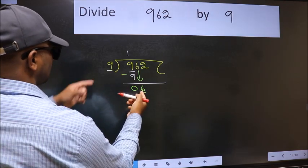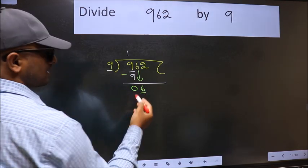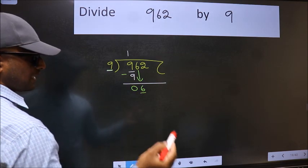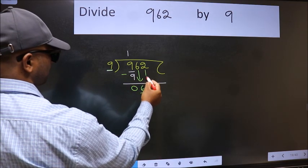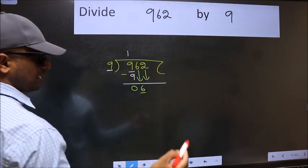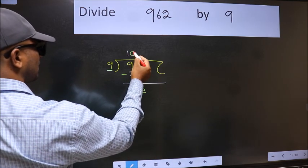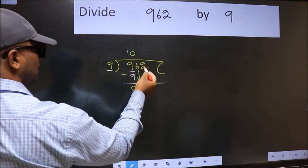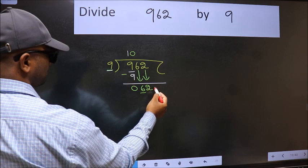6 is smaller than 9, so we should bring down the second number. The rule to bring down the second number is we should put 0 here — then only we can bring this number down.